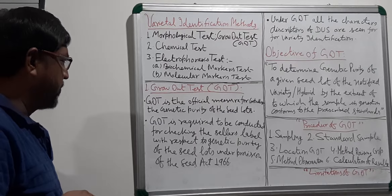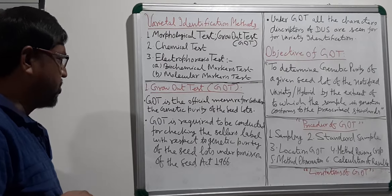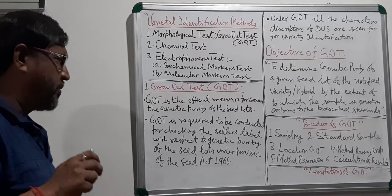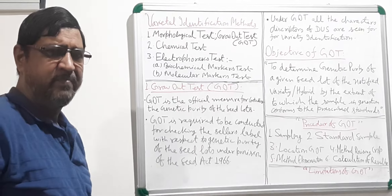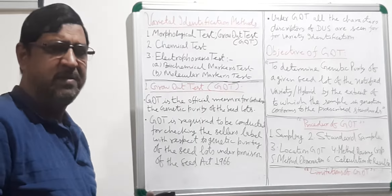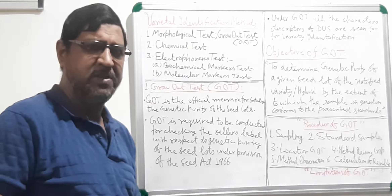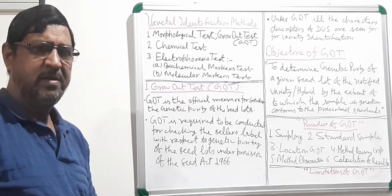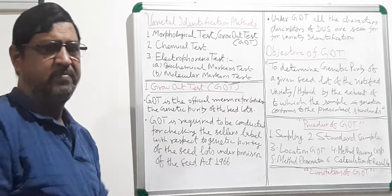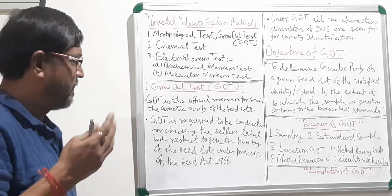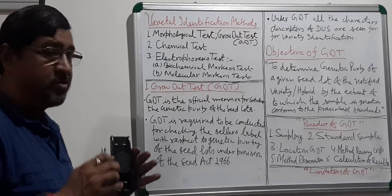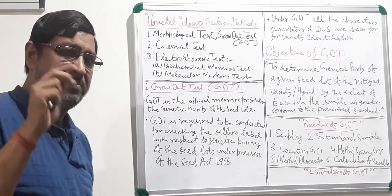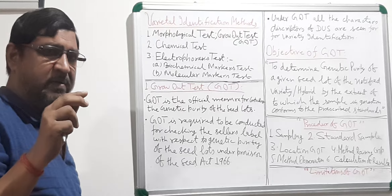The Grow Out Test, also called GOT, is the official measure for controlling the genetic purity of the seed lot. When you certify or test a seed lot through GOT, it controls the genetic purity of that seed lot in the market. So GOT is done specifically for testing genetic purity.